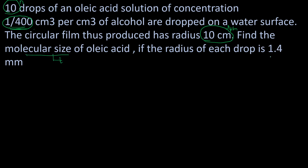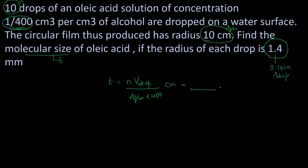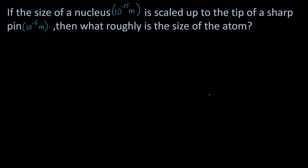Next question: 10 drops of oil are dropped on a water surface; the circular film produced has radius 10 cm. Find the molecular size, given the radius of each drop is 1.4 mm, which equals 0.14 cm. Using the formula: thickness equals n times volume of drop divided by area of film, where n equals 10, volume of drop equals (4/3)π(0.14)³, and area of film equals π(10)².